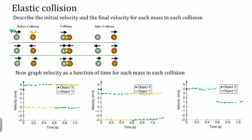Whatever is gained in one object's velocity is a result of the loss in the other. You can see how that all works because kinetic energy is conserved.